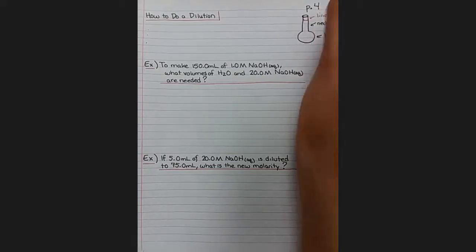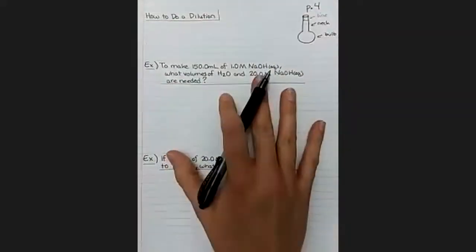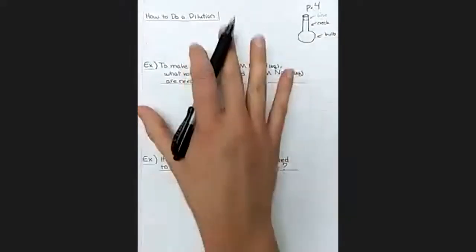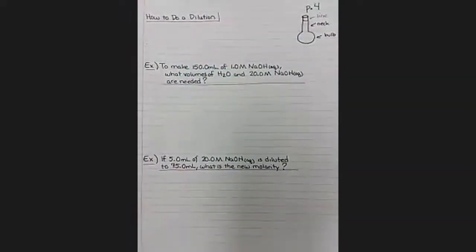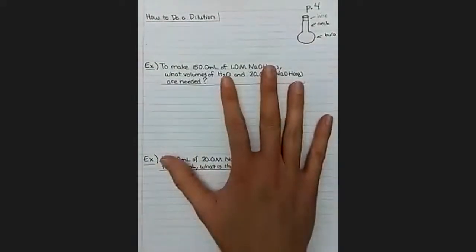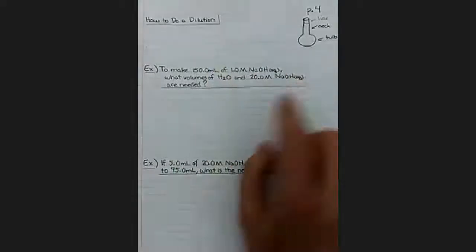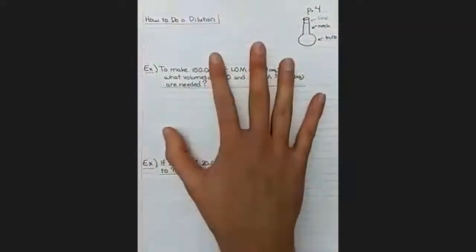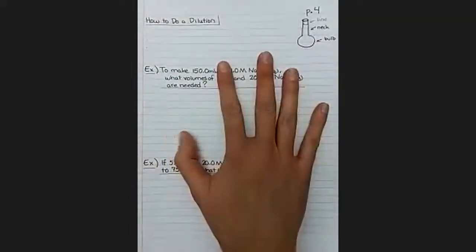So each volumetric flask is calibrated to hold one particular volume, and the most important thing of doing a dilution, other than doing the calculation of course, is remembering that the neck is so narrow that once you fill it with liquid it is almost impossible to mix your solution together. So the other important part is to mix the solution while it's only half filled.